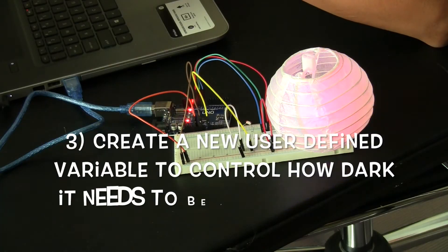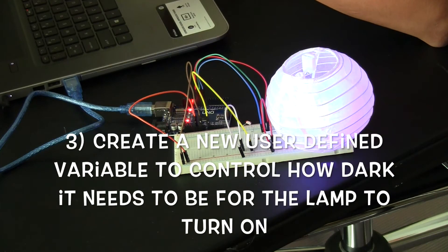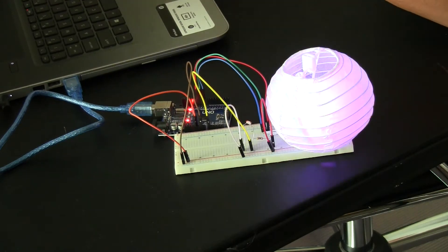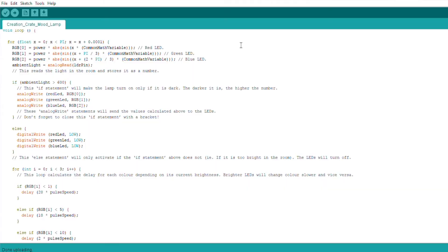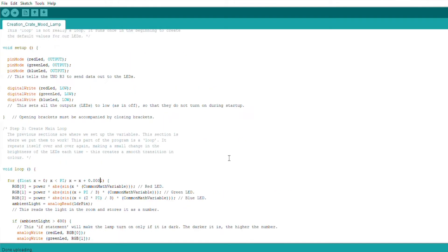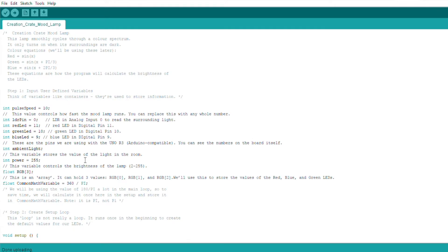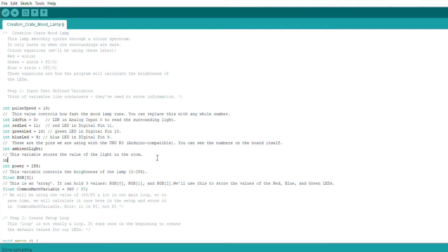Goes off, comes back on again, bright. Oh wow, now it's really cycling through really fast. Alright, so that definitely worked. So now we're cycling through everything faster. We've made it a lot brighter. Alright, question number three: create a new user-defined variable to control how dark it needs for the lamp to turn on. Call this variable ambient_limit. Use this variable to replace the default number in the code.